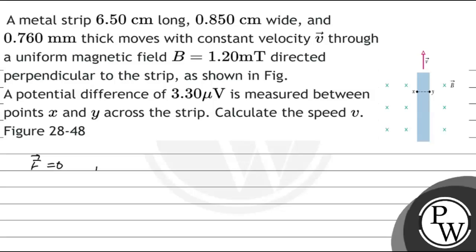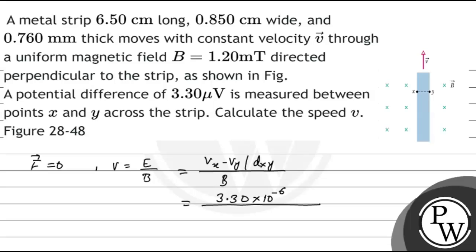Using the relation between electric field and potential difference, we have V equal to E over B. So we calculate Vx minus Vy divided by dxy times B, where dxy is 0.850 cm, i.e., 0.850 × 10⁻² m, and B is 1.20 × 10⁻³ T.